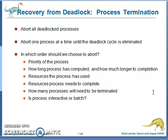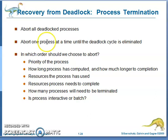The second approach in process termination is to abort one process at a time until the deadlock cycle is eliminated. First, you abort one process and verify whether the deadlock is eliminated or not. If the deadlock still exists, you abort one more process, and continue like that until the cycle is eliminated. So in the first method you abort all deadlocked processes, in the second method you abort one by one.